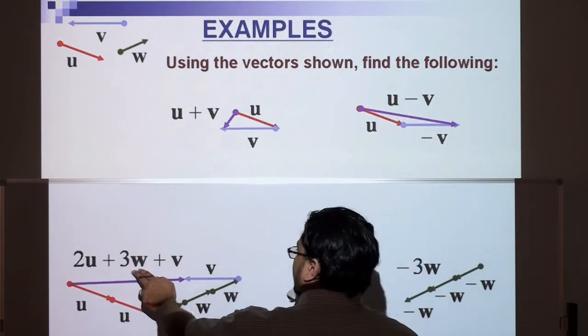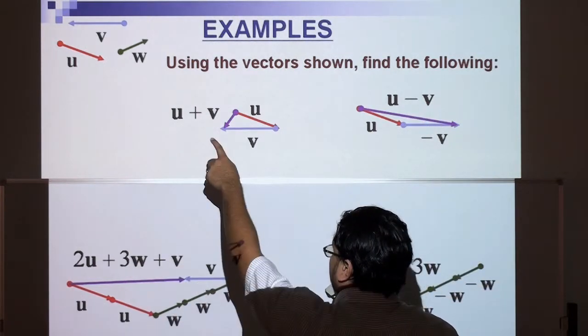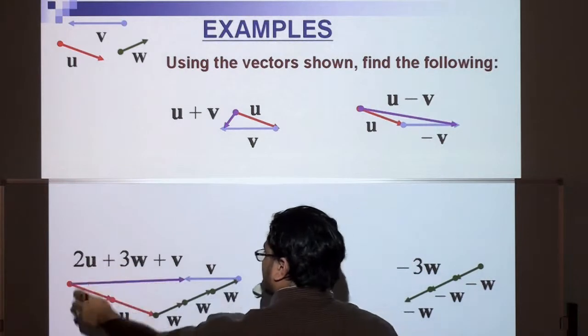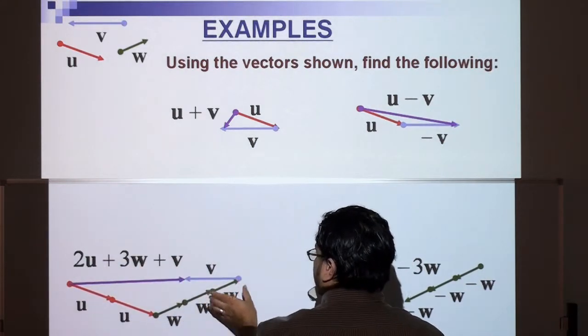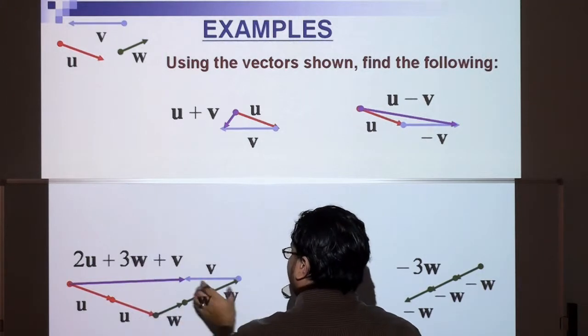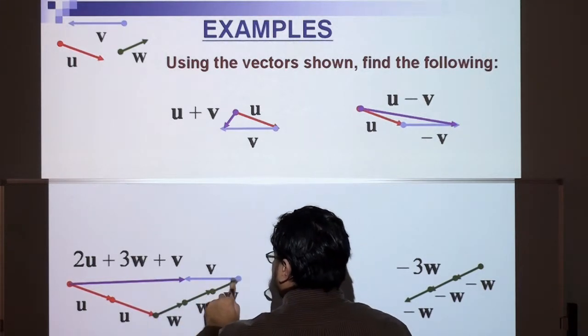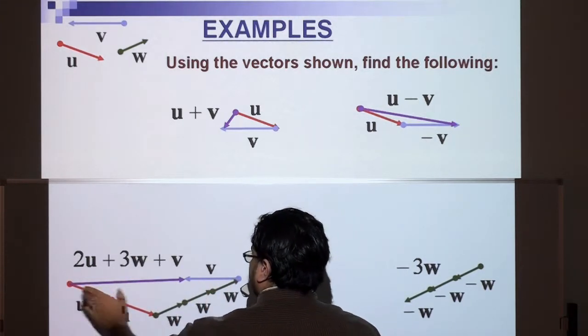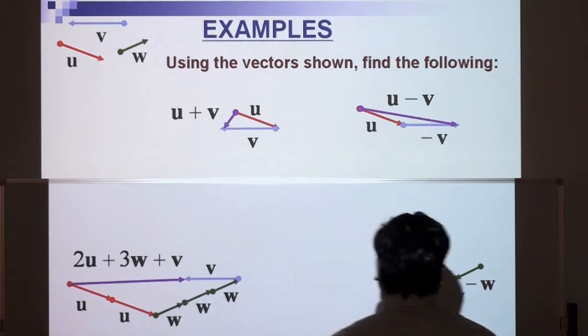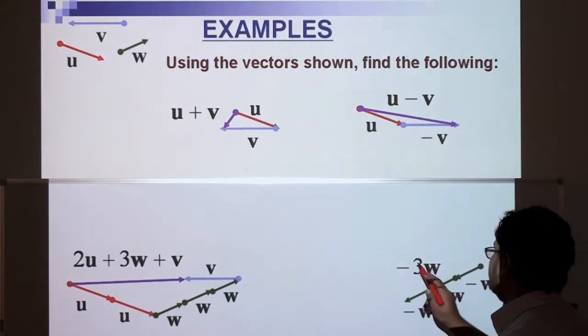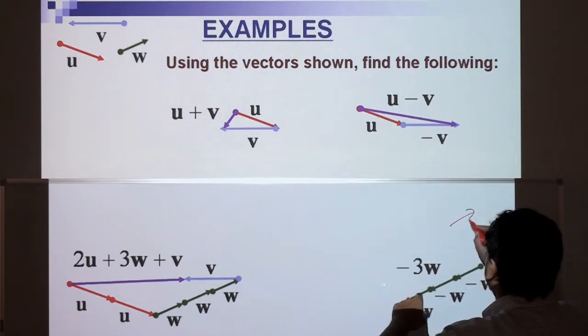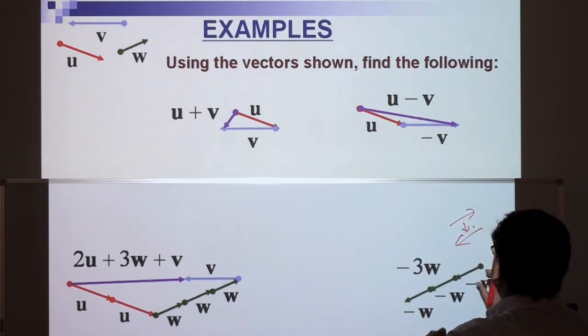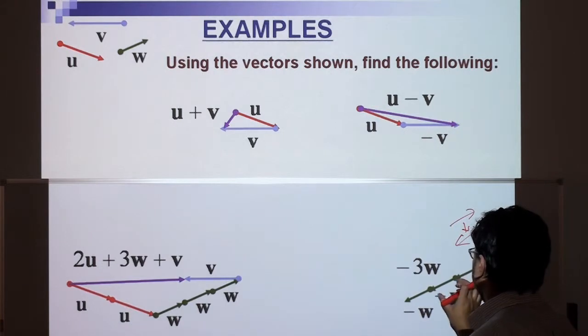Here, 2u plus 3w plus v. So we have u, 2u's plus 3w's: 1, 2, 3, and then plus v again. At the end of that one we add v that way, and this in purple is our resultant vector. And finally we have negative 3w. All we do is change the direction of the w, there becomes there, and 3 multiplied by 3: 1, 2, 3.